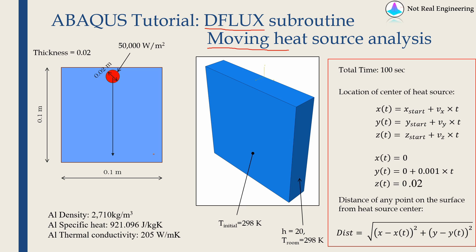This is the geometry of the example we are going to solve. This is a three-dimensional slab and the dimensions of this slab are given here, and the thickness is 0.02 meters. The three-dimensional view is given here. This red circle represents the heat source. In this video I am going to apply a surface heat source which has a diameter of 0.02 meters and we are going to define it using a flux boundary condition. This heat source is moving in the y direction. You can use the same logic to apply a body heat source as well.